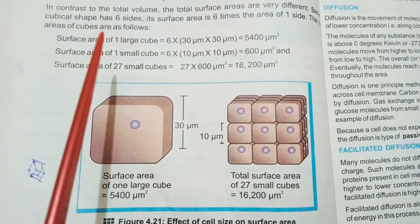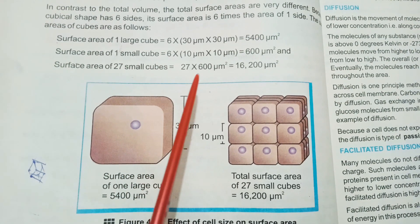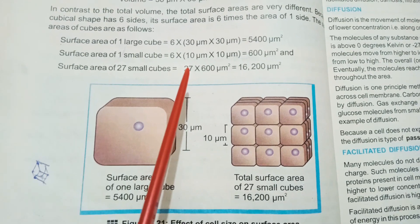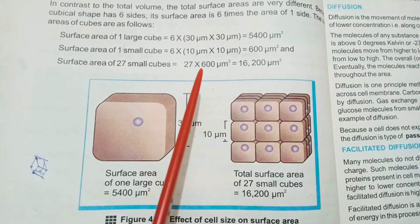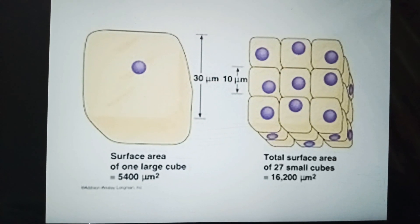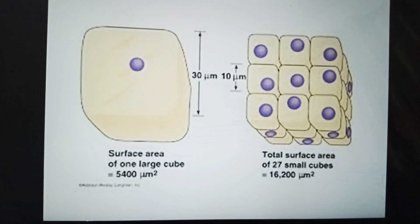So surface area of one large cube would be 5,400 micrometers squared.